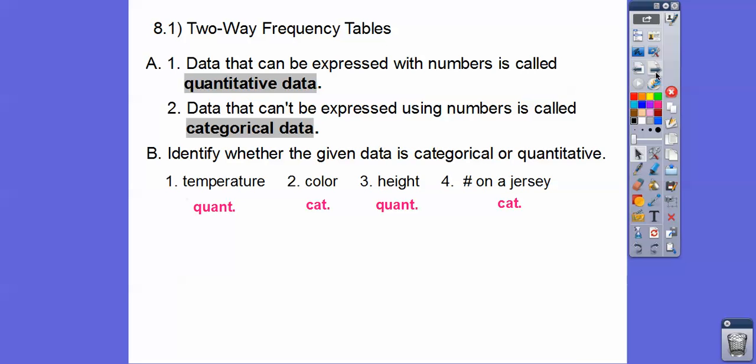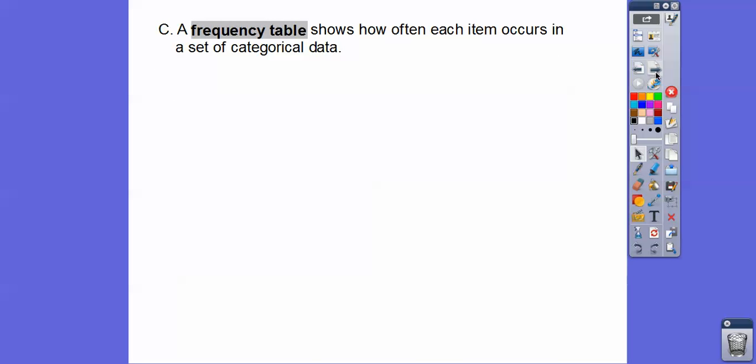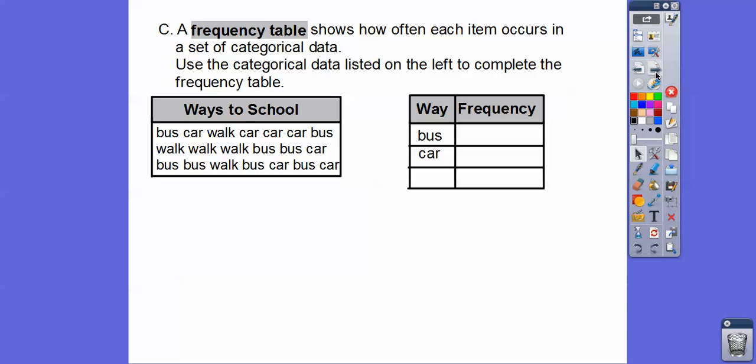So quantitative, categorical, quantitative, categorical. So a frequency table just shows how often each item occurs in the set of categorical data. So for example, use the categorical data listed on the left to complete the frequency table.